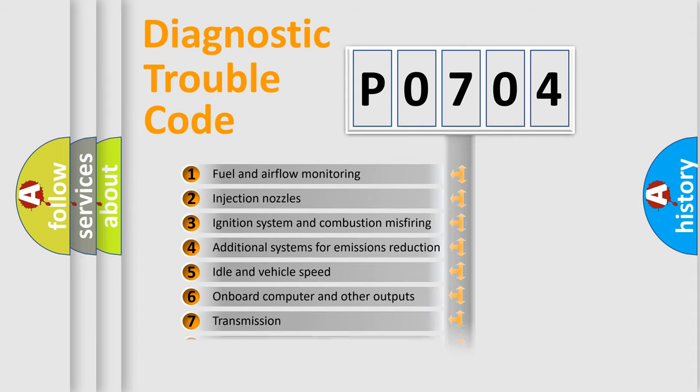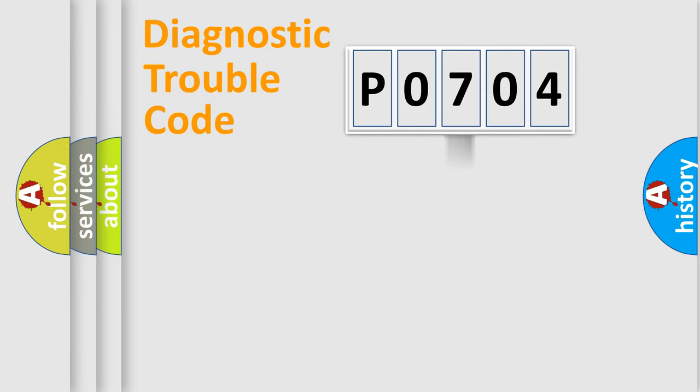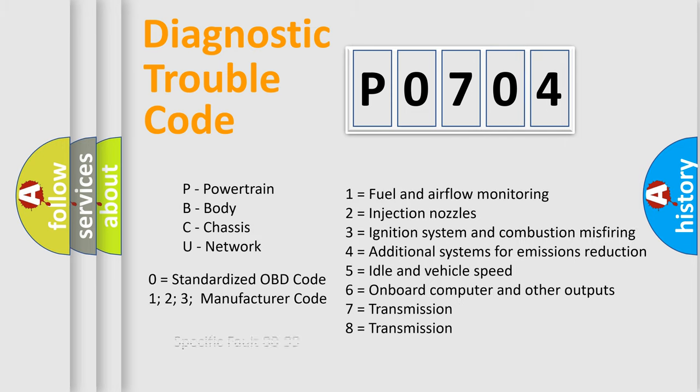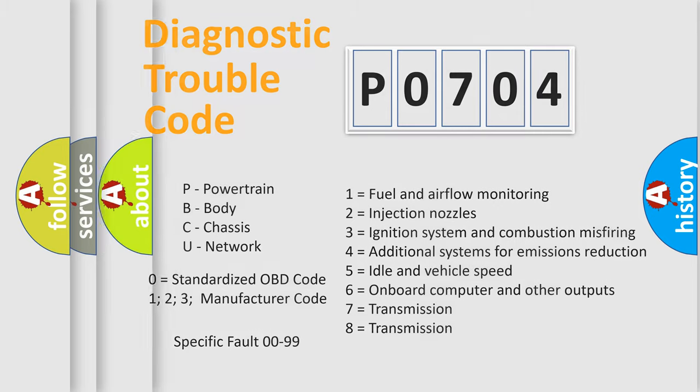The distribution shown is valid only for the standardized DTC code. Only the last two characters define the specific fault of the group. Let's not forget that such a division is valid only if the second character code is expressed by the number zero.